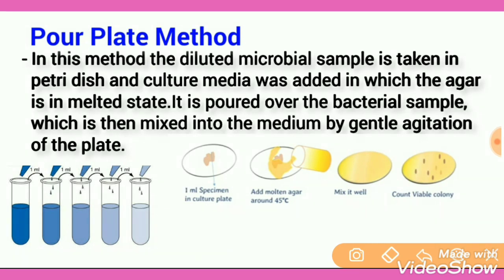In the Pour Plate Method, the microbial sample is diluted. Then, you take a petri dish and add 1 ml of sample using a pipette. The melted agar is then poured into the sample and mixed into the plate by agitation.